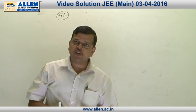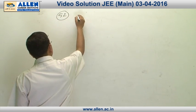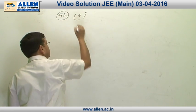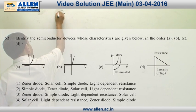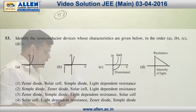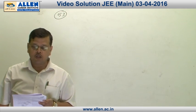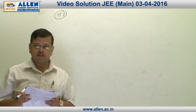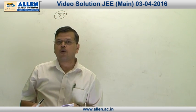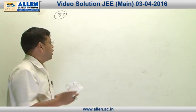Now copper being a conductor, its resistance will increase with increase in temperature, and silicon being a semiconductor, its resistance will decrease with increase in temperature. So the correct option is 4. Question number 53: In this question you have to identify the IV characteristics of four semiconductor devices - zener diode, solar cell, simple diode, and light dependent resistance. From these graphs you can very easily make out that the correct option is 2.